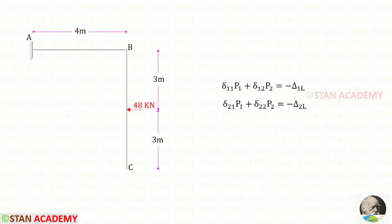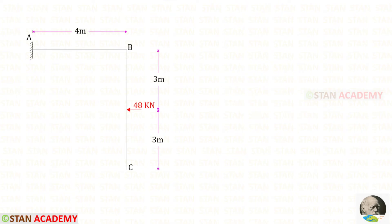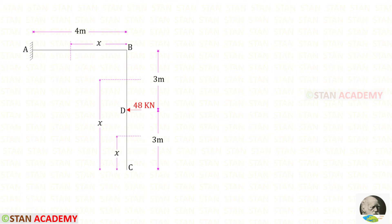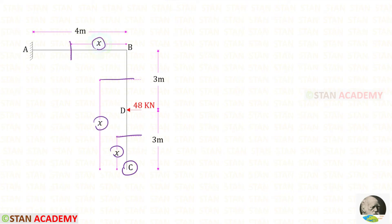Now let us take the released structure. To find the displacements, we are going to use the unit load method. We have to find the moments M, M1, and M2. We have to make sections. Let us keep this point as D. In this frame there are three different parts: AB, BD, and DC, so we have to make three sections. The two sections in DC and DB are made at a distance X from C, and the section in AB is made at a distance X from point B.